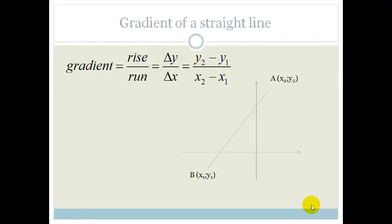Now you guys know, because we've done this before, that a gradient can be described as either your rise over your run, or it can be described as delta y over delta x, or y2 minus y1 over x2 minus x1, if you were given two points.